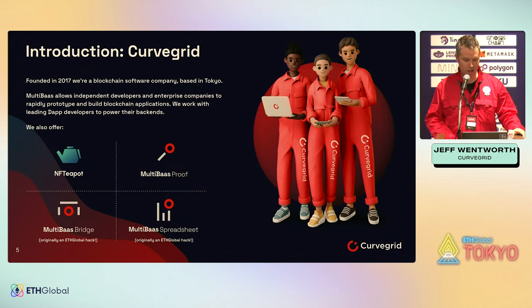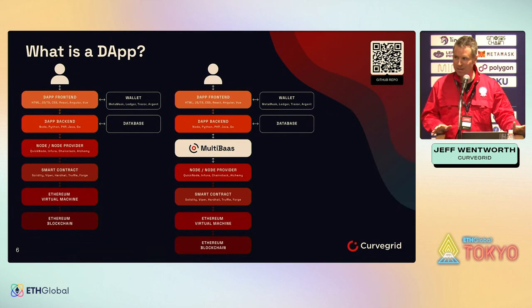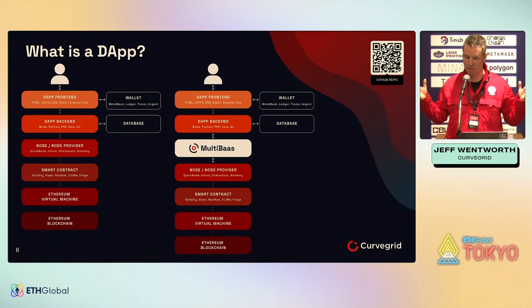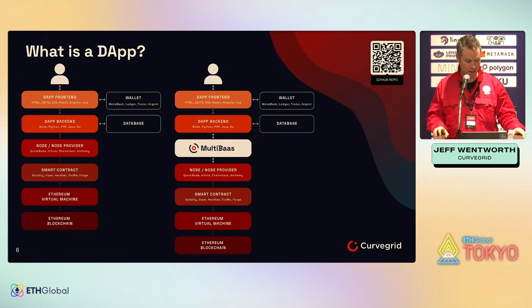In addition to MultiBaaS, we have a MultiBaaS Proof Bridge and Spreadsheet — the latter two are former ETH Global hackathon projects that we turned into products. We also have NFT Pot, a Shopify minting app. So what is a DAP? Going back to basics — whether you're building the next DEX, NFT marketplace, or just hacking for the weekend — a typical DAP has a front end, back end, connecting to a node provider, and a smart contract on the blockchain.